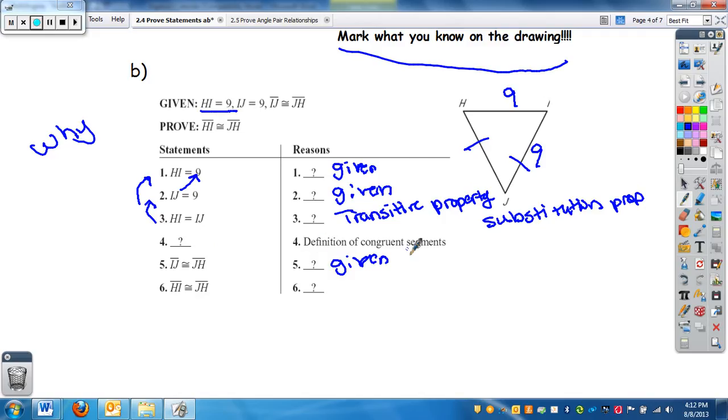So now I have a reason, and I don't have the statement. So I need to figure out what they want to talk about. Definition of congruence. Notice when I want to try to prove, I have the congruent part. So definition of congruent segments. Well, congruent segments, we've been learning our mean, equal. So if I have HI equals to IJ, that also tells me that HI is congruent to IJ.